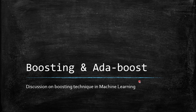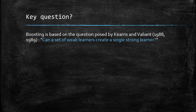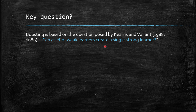In this video we will talk about the idea behind the boosting algorithm, and we will also go very deeply into the AdaBoost algorithm and its implementation. The key question that triggered the research behind this boosting technique is this: the main idea behind boosting is, can a set of weak learners create a single strong learner? There was a research paper by Kearns and Valiant published in 1988 to 1989 which asked this question, and eventually algorithms like AdaBoost and other boosting algorithms were developed.